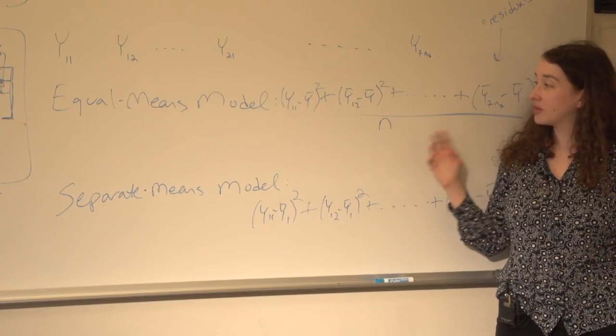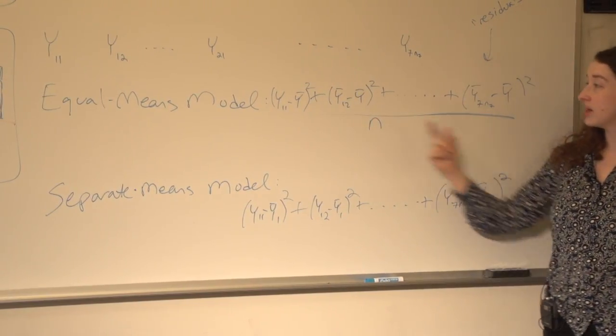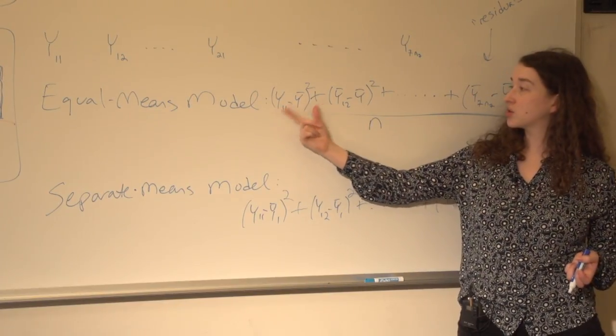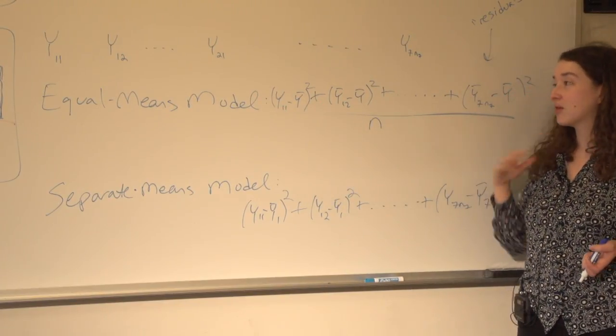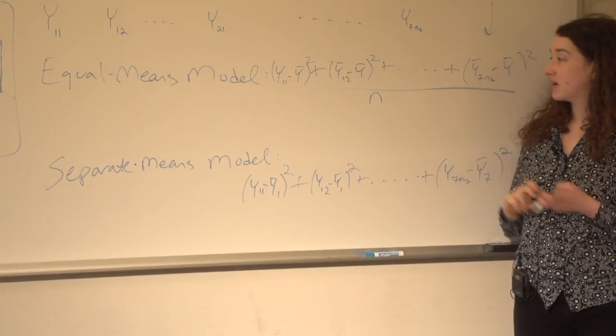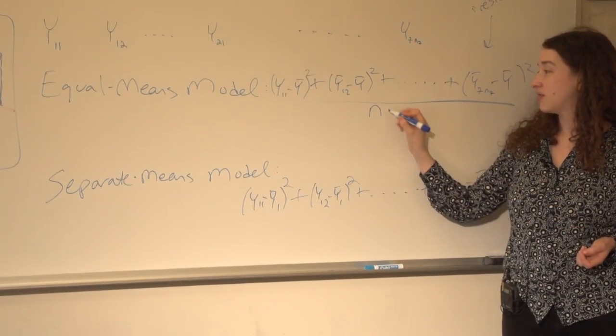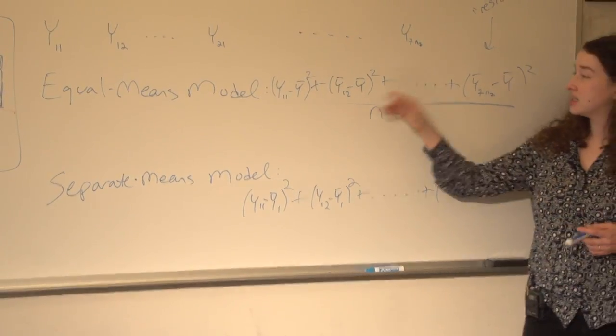Y bar is the sample mean of all the data points. If I take each data point, see how far it is from Y bar, square it, add them all up, divide by how many there are, this is just the variance, right? That is just the variance, and this would be the sample variance. So these quantities here, these sums of squares,